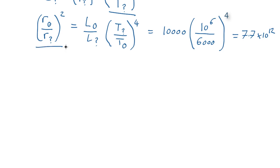So we've got a square here. So let's take the square root of both sides of the equation. We therefore find that R Sun over R mystery object is equal to the square root of this, which comes out as 2.8 by 10 to the 6.